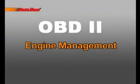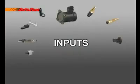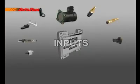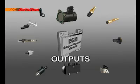An engine management system such as OBD-II can be divided into three main parts. The inputs are sensors, the processing unit or main computer, and the outputs, which are primarily fuel injectors, ignition coils, and transmission shift solenoids.